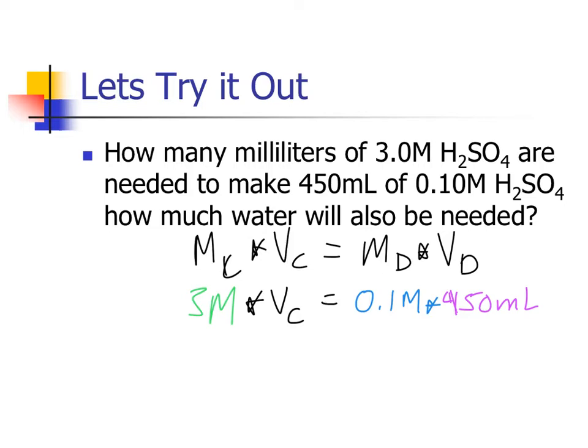What we'll be able to do then is take 0.1 times 450, which gives us 45, which will equal the volume of the concentrated solution times your molarity. Divide both sides by your molarity of 3, and we find that our answer is 15 milliliters.